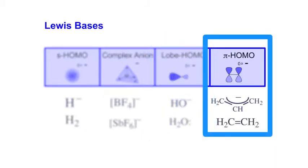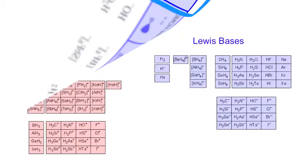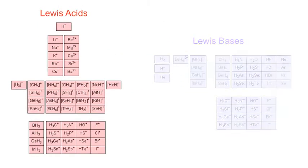And fourthly we come to the Pi Homo species. These are electron rich Pi systems such as the allyl anion, ethene, benzene, etc. We can do the same thing with Lewis acids.